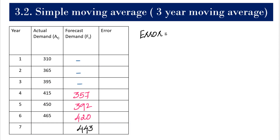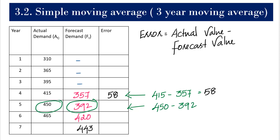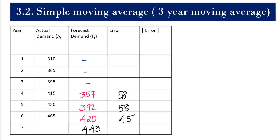For calculating the error we take: actual value minus forecast value. For period 4: 415 minus 357 gives us 58. For period 5: 450 minus 392 gives us 58 again. For period 6: actual demand 465 minus forecast 420 gives us 45.